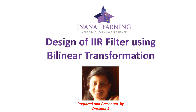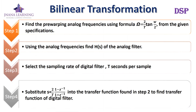In previous lectures, we discussed the design of IIR filter using impulse invariance technique. In the design of IIR filters, first we design an analog filter using the Butterworth filter method or Chebyshev filter, then we transform that analog filter to a digital filter using impulse invariance technique, bilinear transformation, or some other technique. Here I am explaining the various steps in the bilinear transformation.